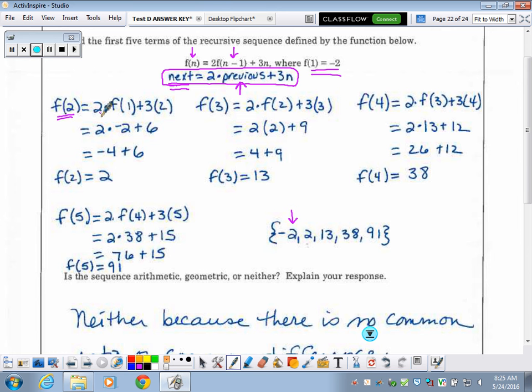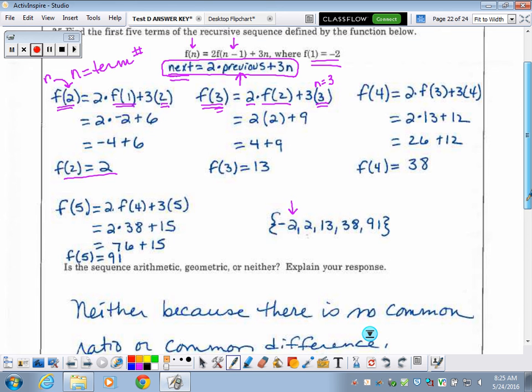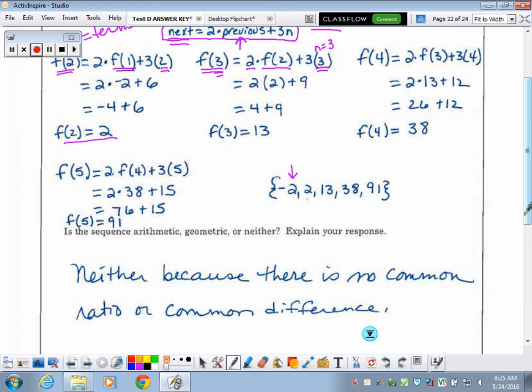So, if you already know f of one, the next one you're finding is f of two. So, to get f of two, it's two times the previous, which is f of one, plus three times the n value. n is your term number. So, this is your n value. So that's what you're going to use here. You do the math. And you end up with f of two equals two. Doing the math is the easy part. The harder part is understanding how to get to that first line. So, then to get the next one, f of three, it's two times the previous one, which is f of two, plus three times n. Well, in this one, n equals three because you're looking for the third term. And so on. You can follow it all the way through. They want to know is this sequence arithmetic, geometric, or neither. Well, recursive is neither because there is no common ratio, your r value, or common difference your d value.